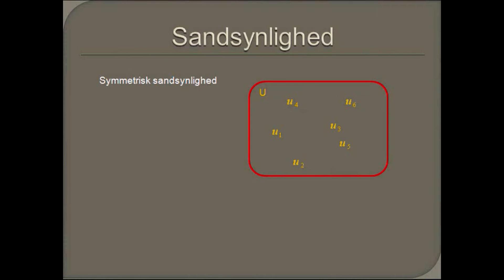Et sandsynlighedsfelt, hvor alle udfald har samme sandsynlighed, kaldes symmetrisk. Vi kan igen tage udgangspunkt i vores eksperiment med terningen, hvor hvert øje har lige stor sandsynlighed for at dukke op. I et symmetrisk sandsynlighedsfelt med n udfald vil hvert udfald have sandsynligheden 1/n. Sandsynligheden for en hændse H med et bestemt antal udfald kan vi finde ved hjælp af følgende formel: vi dividerer de udfald der får hændsen til at indtræffe med antallet af mulige udfald.